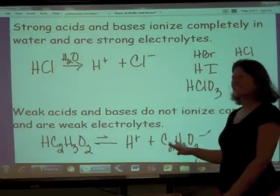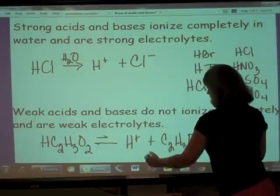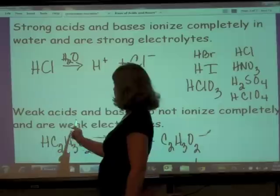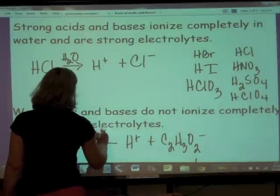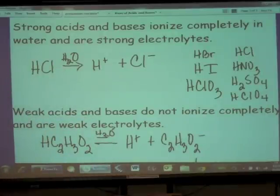They just slightly dissociate. So there's a little bit of hydrogen and acetate ion in solution, but mostly the species in solution here is going to be HC2H3O2, not dissociated. Which are weak acids? Well, as long as they're not a strong acid.